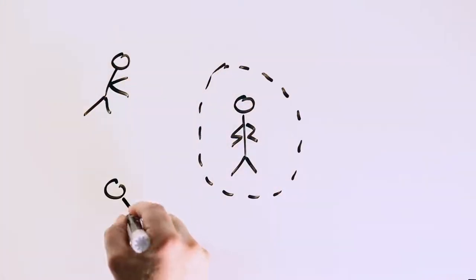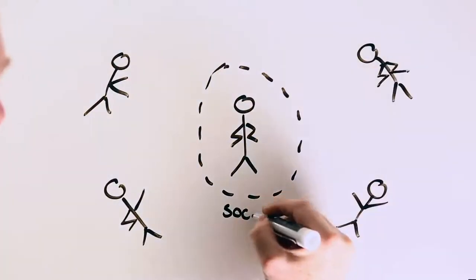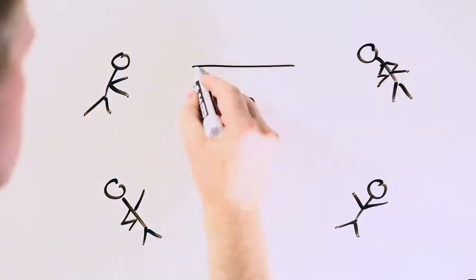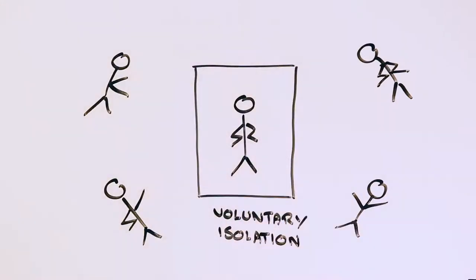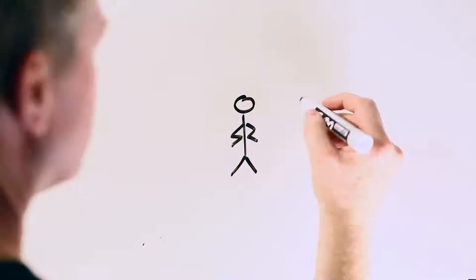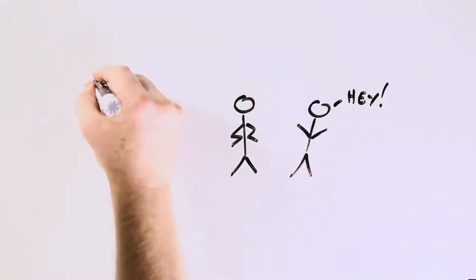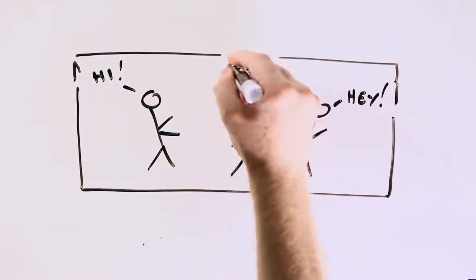As the virus spreads, more and more people are being advised to distance themselves physically from others and to isolate themselves if they've been around someone who carries it. Yet if you're a student living in a dorm with others or in a house or an apartment, this is easier said than done.